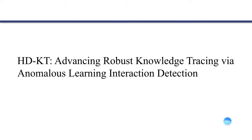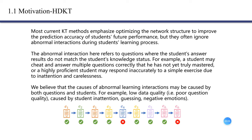Hello, this is the paper HDKT: Advancing Robust Knowledge Tracing via Anomalous Learning Interaction Detection. Most current KT methods emphasize optimizing the network structure to improve the prediction accuracy of students' future performance, but they often ignore anomalous interactions during students' learning process.